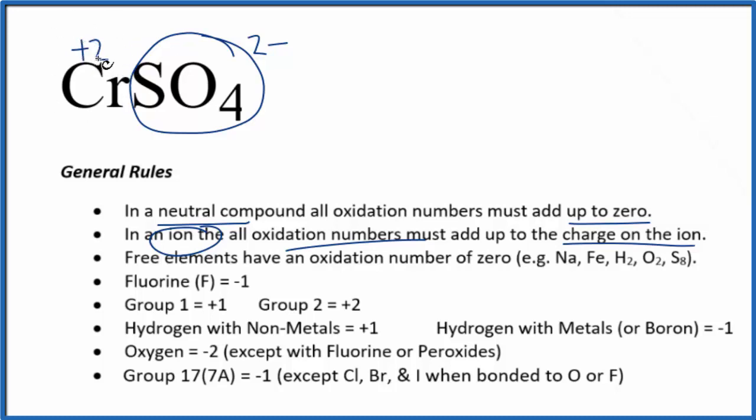So our chromium here, chromium 2, that's why we call it chromium 2 because of the plus 2, has an oxidation number of plus 2. If we add all the oxidation numbers up, we get zero.